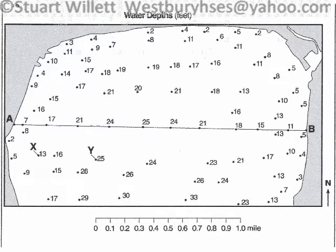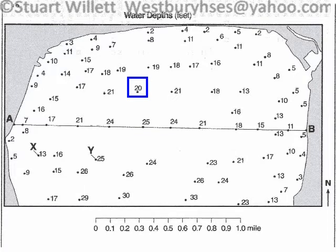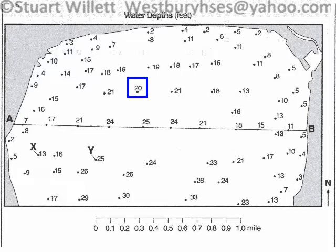The first task we have is to plot the contour line for 20 feet. I'm going to show you that on this map there are a couple of points that are 20 feet, and I'm highlighting them. But you realize there are only a couple, because when we were taking the data, we weren't trying to get any specific depth — we were just collecting data. So now we have to figure out where 20 feet goes.